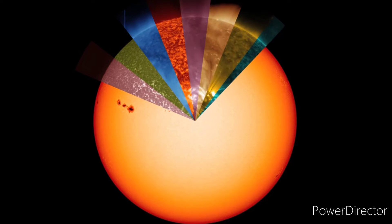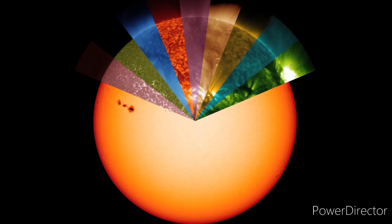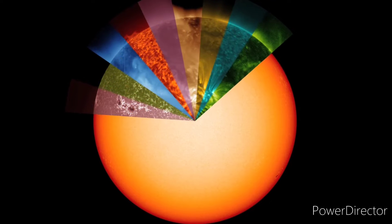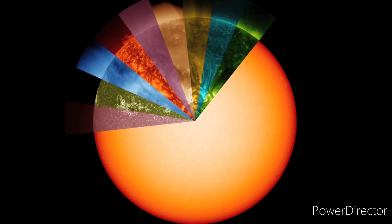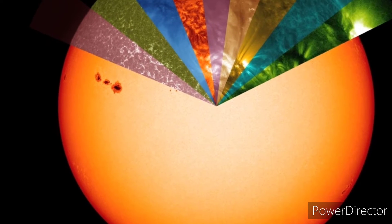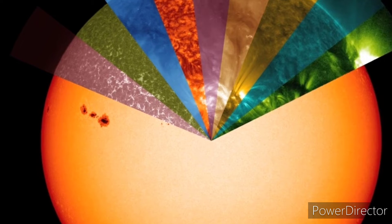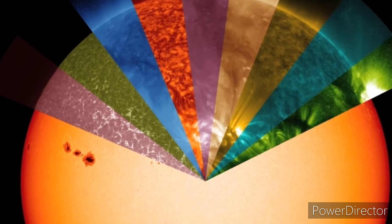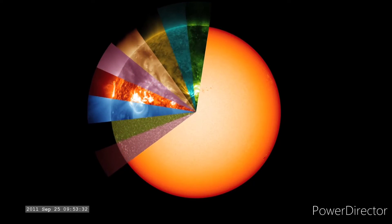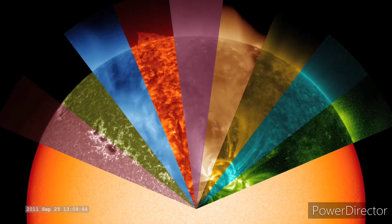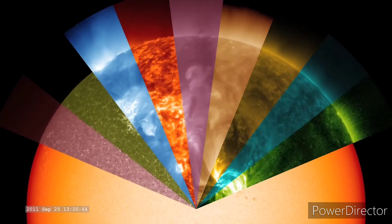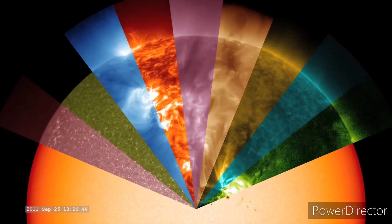For us to see them, scientists convert SDO's data to colors we can see. The different colors correspond to different temperatures and regions on the sun. This allows us to study how the sun releases material that can travel across the solar system and affect our technology in space and on Earth.